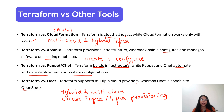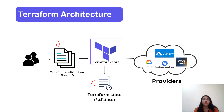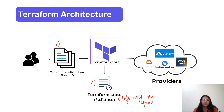Now let us talk about the architecture of Terraform. First we have the Terraform core, which consists of two main things: the Terraform configuration files and the Terraform state file. In the configuration file you declare the resources you want to create. The state file contains all the information about the existing infrastructure. Then we have providers — providers are plugins with the help of which Terraform can communicate with different cloud providers and create resources on those different clouds.